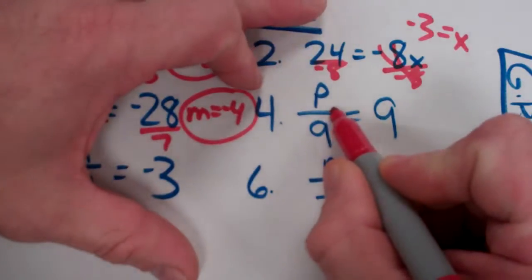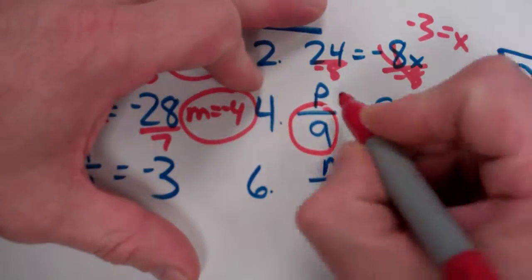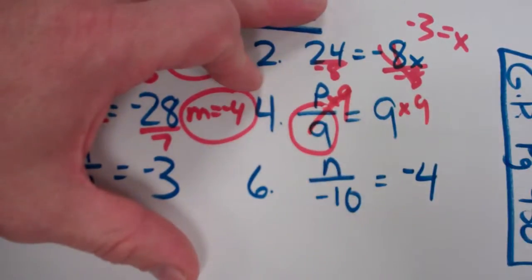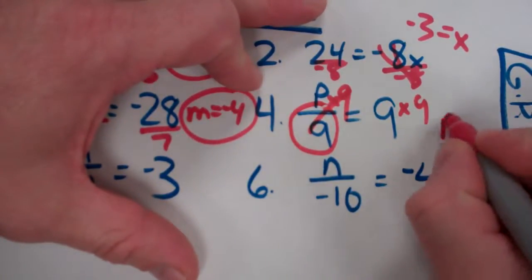So once again, here's the variable. What did they do? They divided by 9. So let me take it times 9 on both sides to undo what they did. Those cancel out. And you get p equals 81.